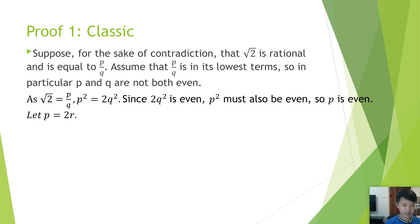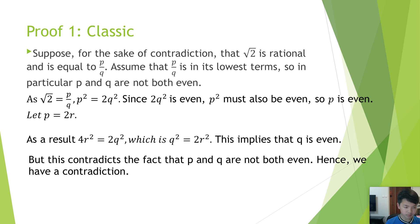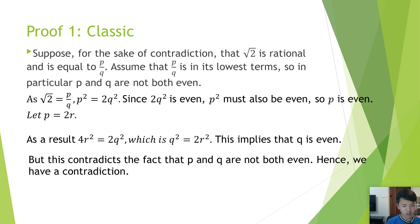Let p be equal to 2r. As a result, 4r squared equals 2q squared, which means q squared equals 2r squared. This implies that q is even. But this contradicts the fact that p and q are not both even. Hence, we have a contradiction.